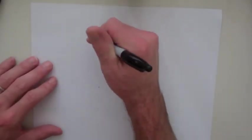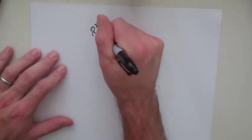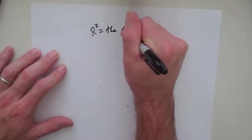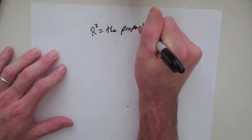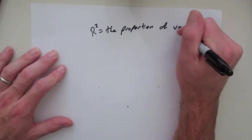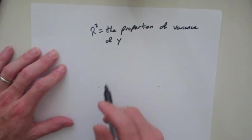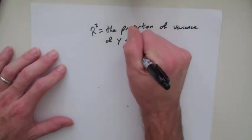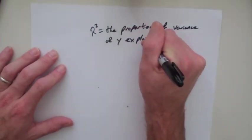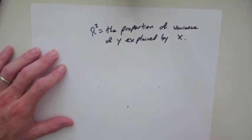One last aspect of regression that I want to go over is something called the r-squared value. This is the proportion of the variance in your independent variable explained by your dependent variable.